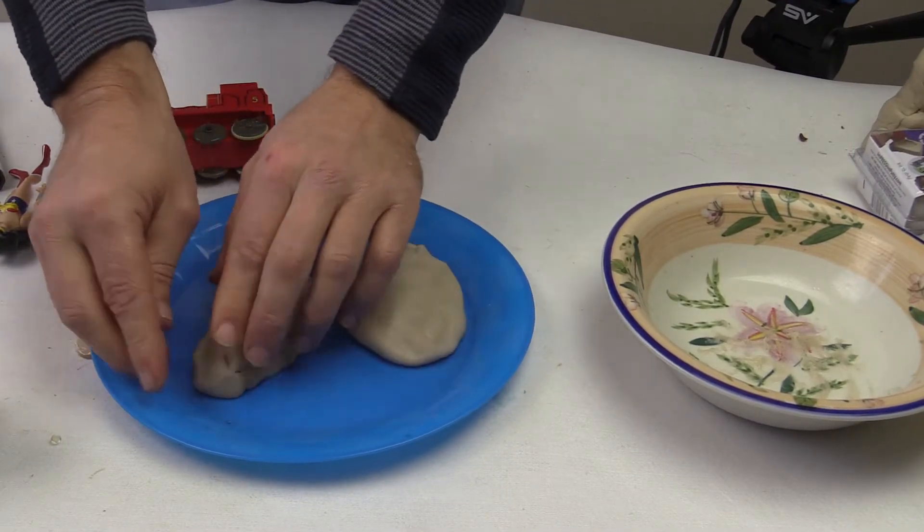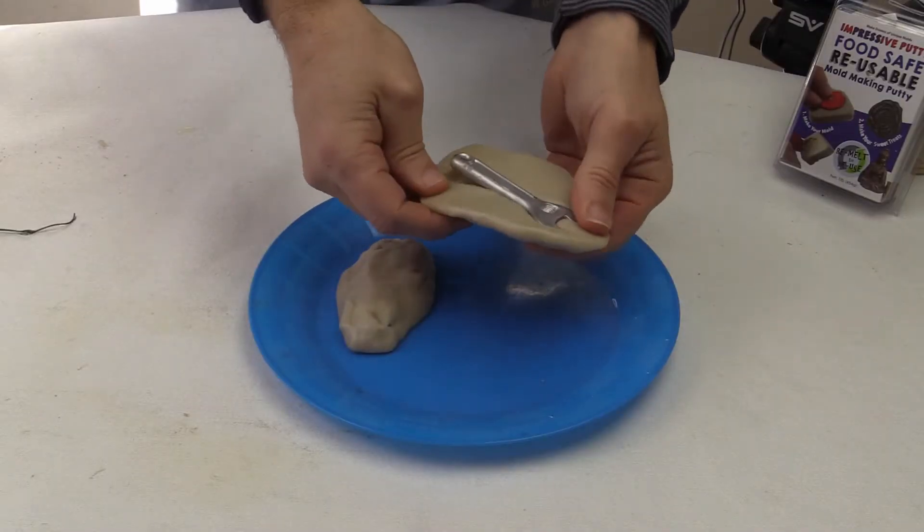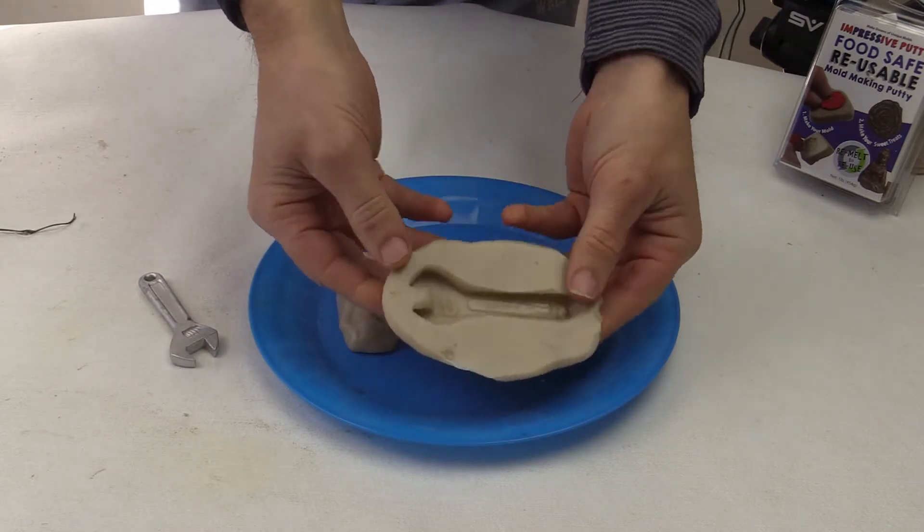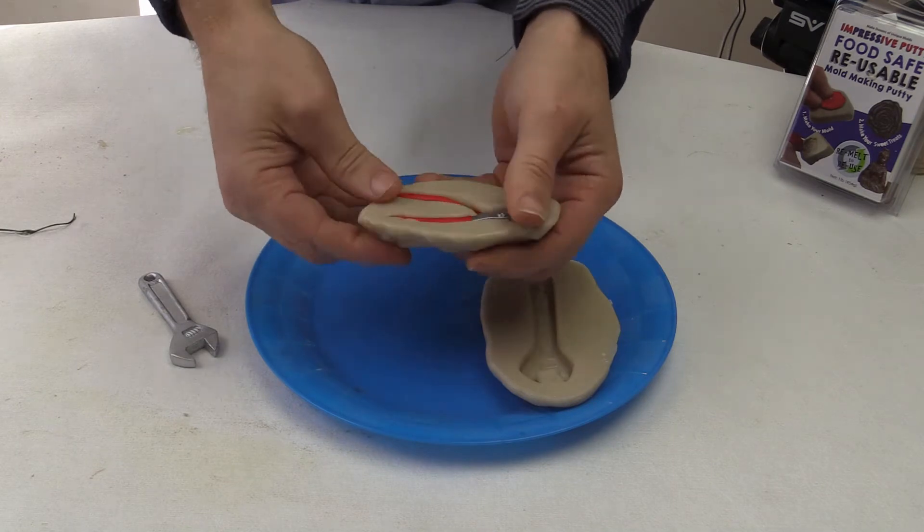In the freezer this takes about 20 minutes to solidify to a rubber. You know it is ready when you press on the mold and it doesn't leave an indentation. Pull out your original shapes. First we took out the adjustable wrench and then the pliers.